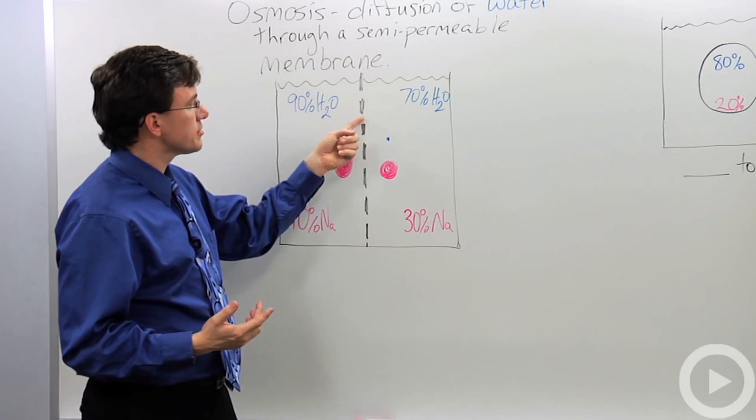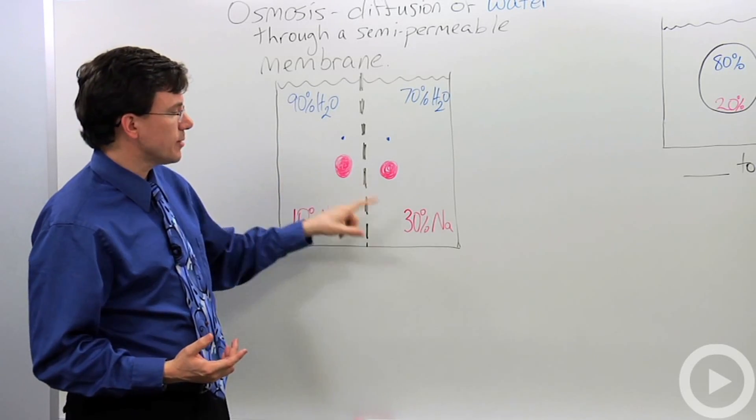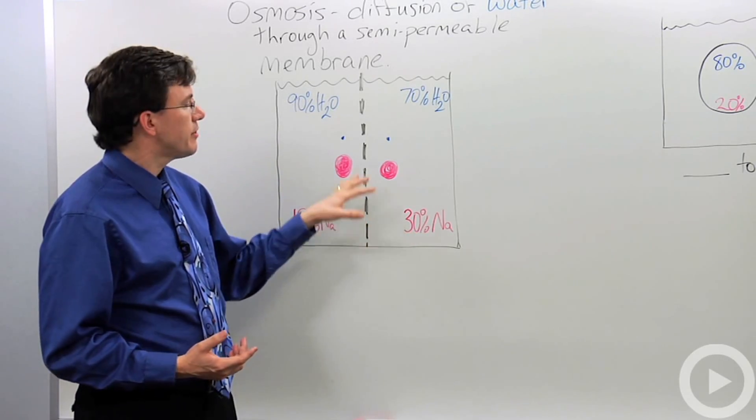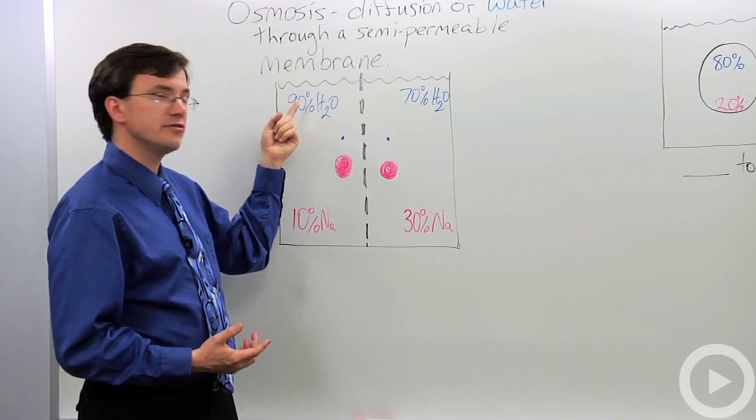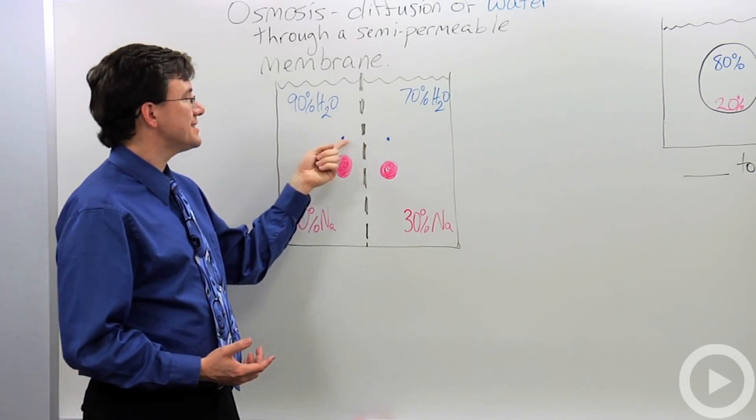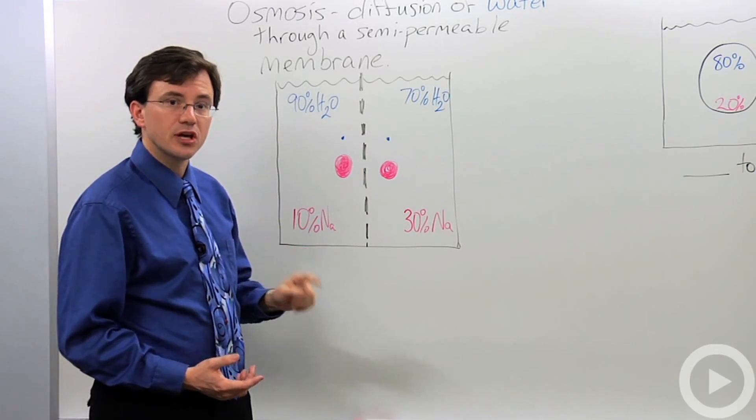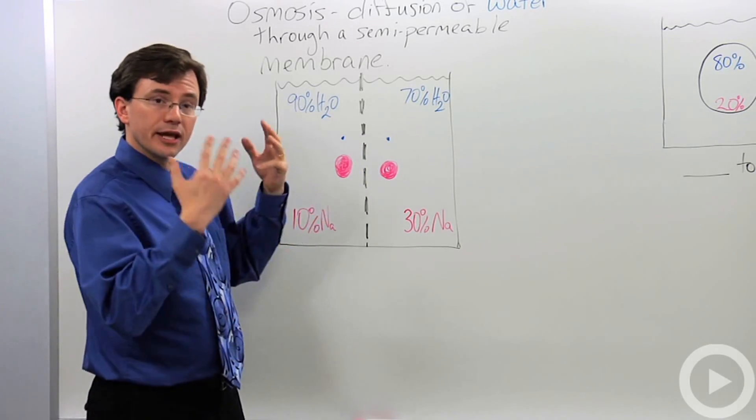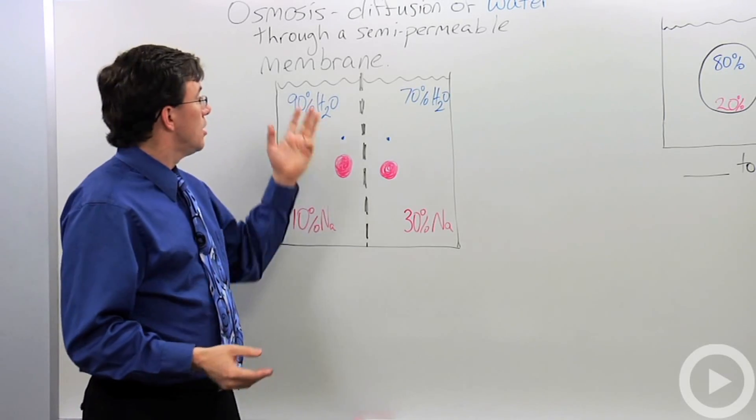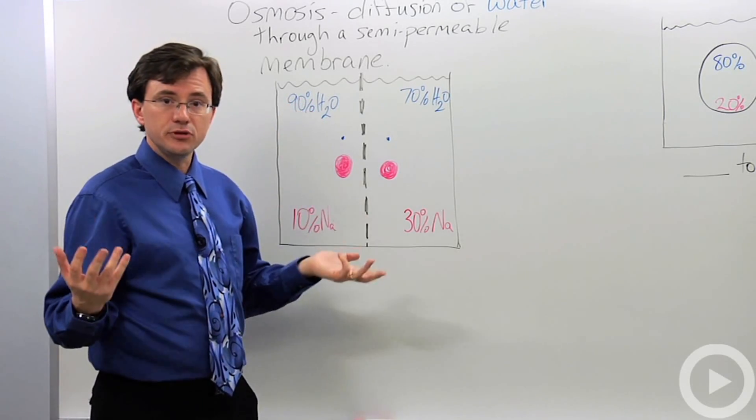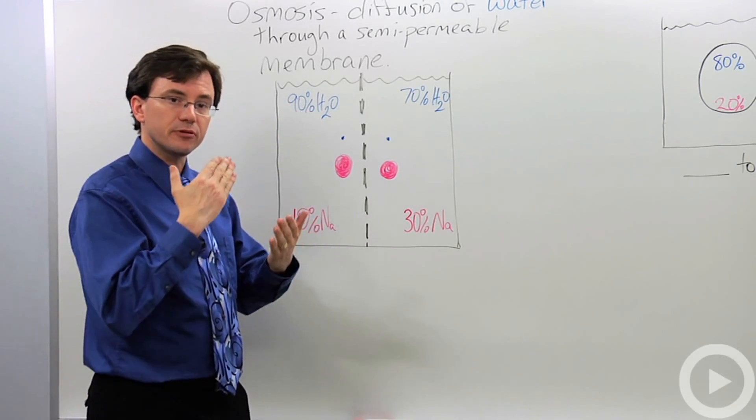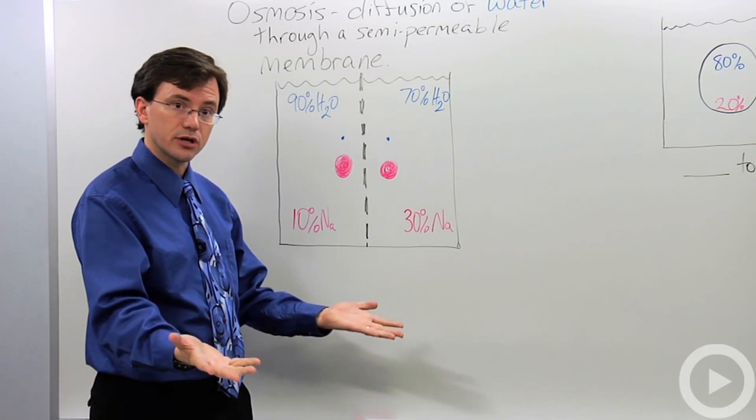You'll notice that there's small holes in it. I've used red to represent sodium ions. They're too large to fit through these holes. I've used blue to represent water. It's easily small enough to fit through. So what happens is that like all other molecules, water does diffusion and you know diffusion is the movement from an area of high concentration to an area of low concentration.